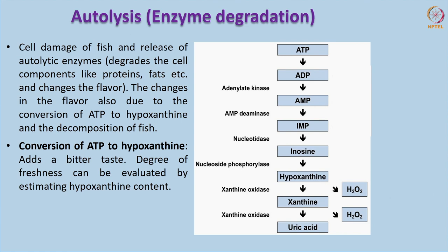One such example is the conversion of ATP to hypoxanthine. Whenever the animal dies, anaerobic degradation occurs or glycogen is degraded to lactic acid. At the same time, ATP molecules are also decomposed: ATP loses phosphate to become ADP, then AMP, then IMP. From ATP to IMP it is a slow reaction, taking around 24 hours or less. But from IMP to hypoxanthine it is a fast reaction. Once hypoxanthine is formed, it gives bitterness or bitter taste to the product. Therefore, hypoxanthine is taken as an indicator or biomarker to determine the freshness of the fish.